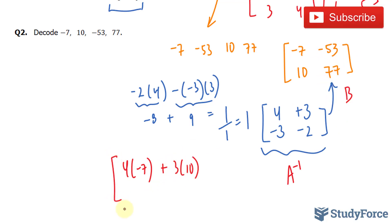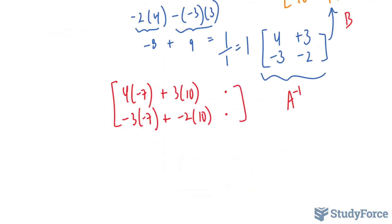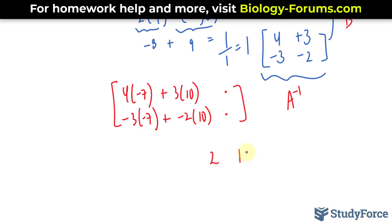That's the upper left corner element. To find this one, we have -3 times -7 plus -2 times 10. And after finding this one and this one, your completed matrix should look like this: 2, 19, 1, and 5.